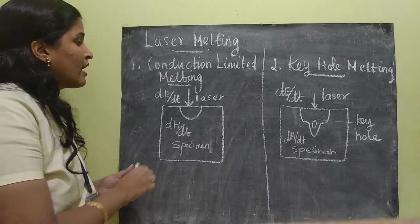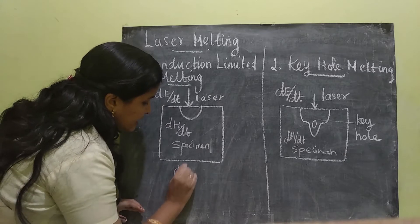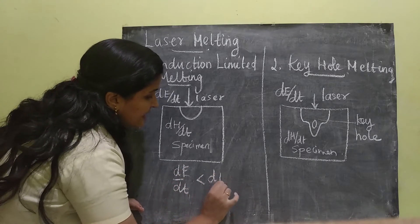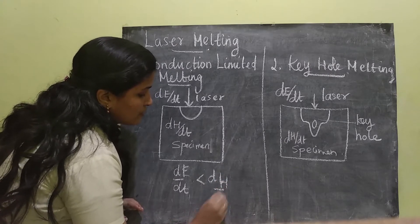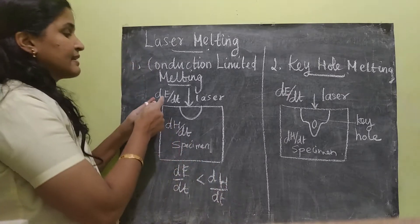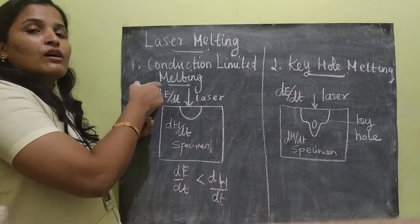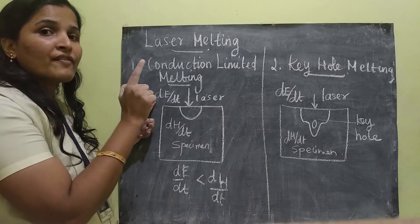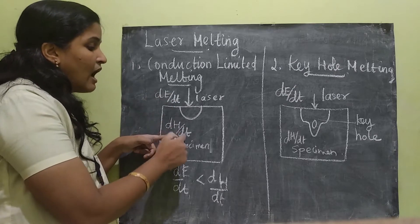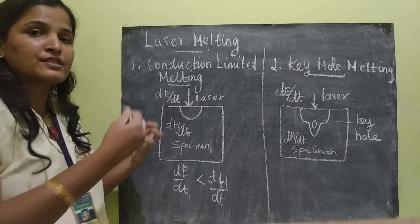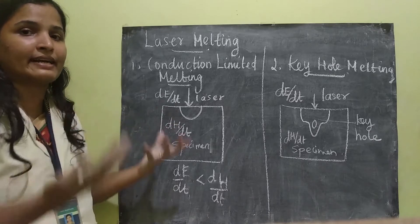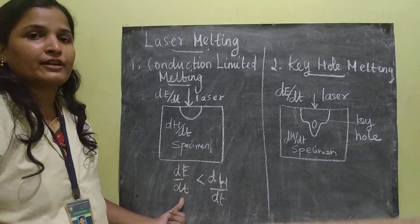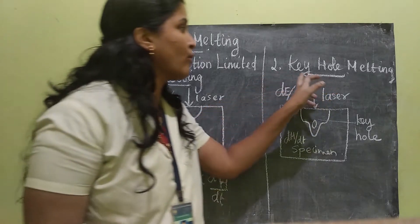Here, dE/dt will be less than dH/dt. dE/dt is the amount of energy of the incident laser. Since low power laser is used, it will be very less, and dH/dt is the amount of energy absorbed and conducted. So dH will be greater than the amount of energy incident.